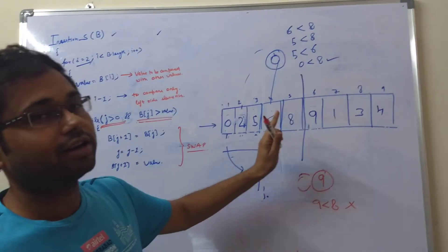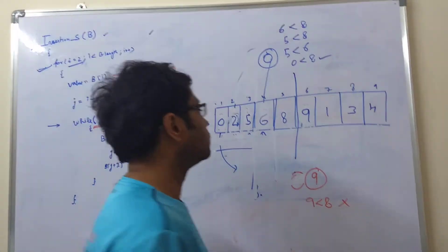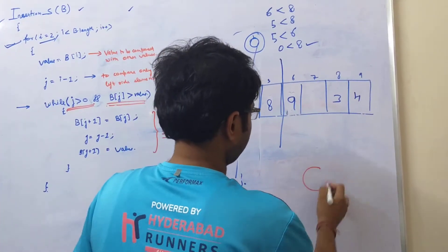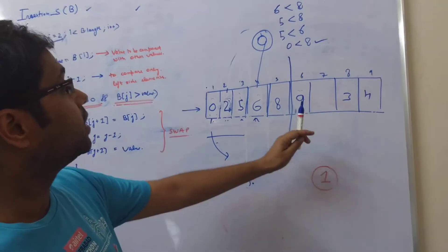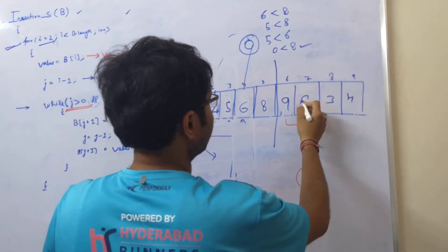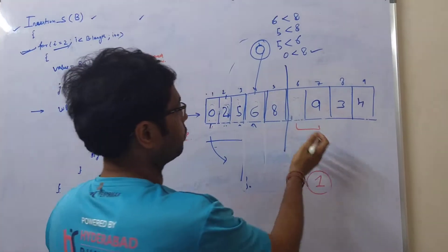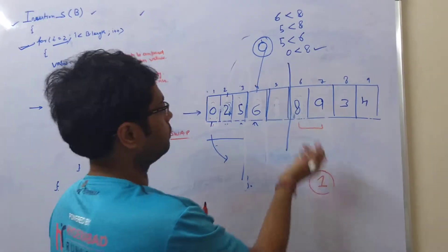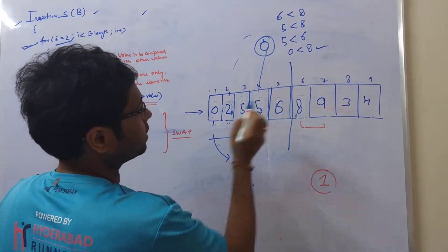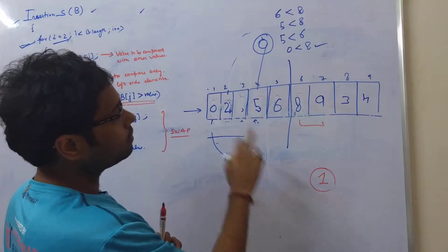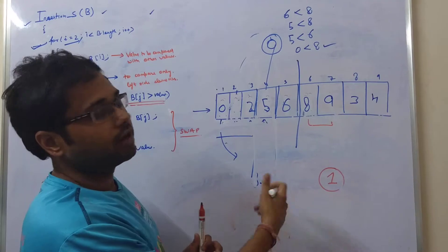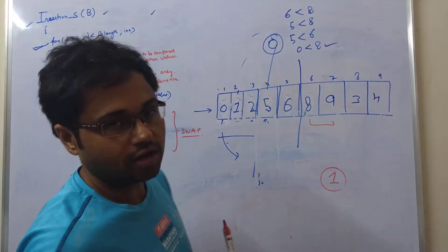The next number we take is 1. One is less than 9, so we shift 9. Eight is also greater than 1, so 8 needs to shift. Six is greater than 1 — it also needs to shift. Five is greater than 1 — it also needs to shift. Then comparing with 2: 2 is greater than 1 — it also needs to shift. Now we compare with 0: 0 is not greater than 1, so we place 1 here.